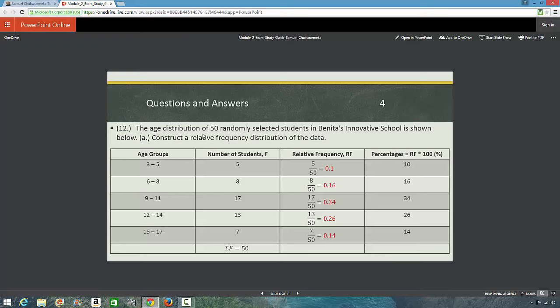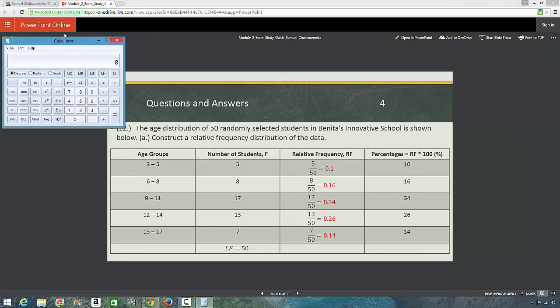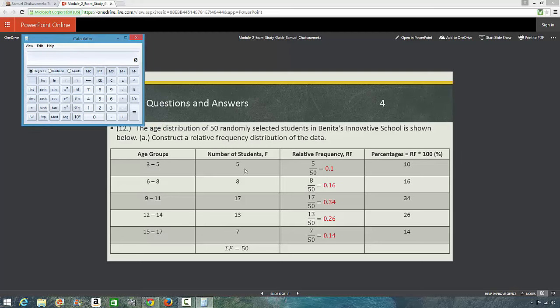The age distribution of 50 randomly selected students in Benitez Innovative School is shown below. Construct a relative frequency distribution of the data. So, we talked about the relative frequency distribution which is the individual frequency divided by the total frequency. Sigma. Sigma means summation. So, if you get your calculator, this is Windows 8. You just get your calculator here. Search. Calculator. And this is the one we need here. Initially, you will have it in standard but you change it to scientific. So, when you add this up, you know, 5 plus 8 is 13. 13 plus 17 is 30. 30 plus 13 is 43. 43 plus 7 is 50.